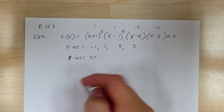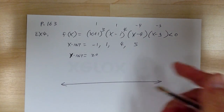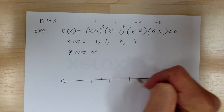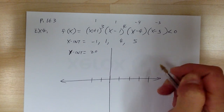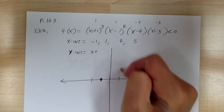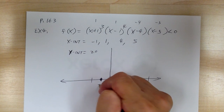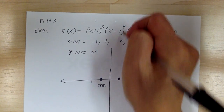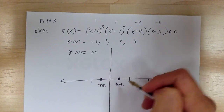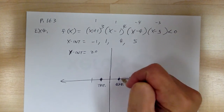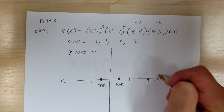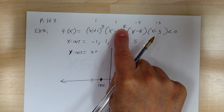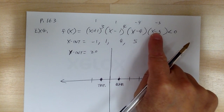Now let's sketch. The total degree is 3 + 4 + 1 + 1 = 9th power, so there's a lot of wiggling. The leading coefficient is positive, so the graph starts going up on the right. At x = 1, it's a 4th-power (even) root, so the graph touches and bounces — it does not go through. Plot -1, 1, 4, 5 on the x-axis.